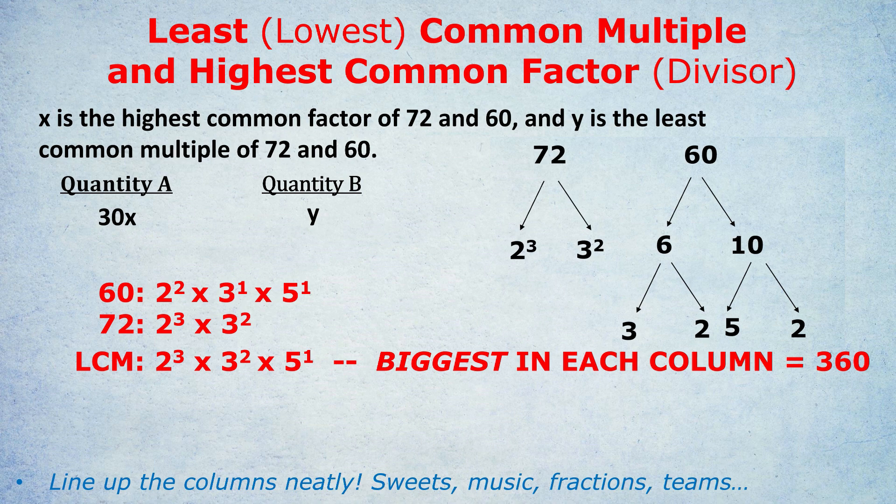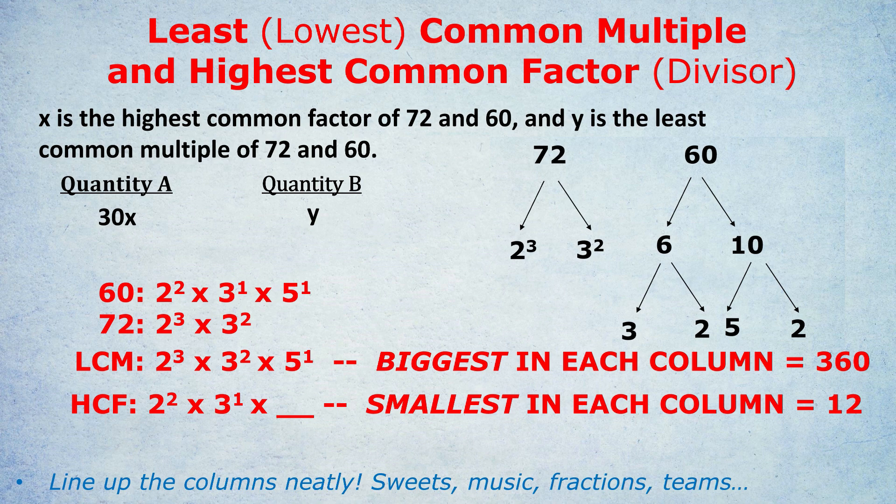I'm going to try and work that out. For the HCF, the smallest number in each column is 2 squared, 3 to the power of 1, and blank. You don't write 0 because that would actually become 0 if you multiply by 0. You just leave it blank because blank is smaller than 5 to the power of 1. So in this case, the HCF, the highest common factor or divisor of 72 and 60, is 2 squared times 3, which is 12. And that is how you work out the HCF of two numbers. Same thing as LCM, just the smallest number in each column. I bet you guys are amazed. If this was new to you in any way, by the way, please do leave a like and a comment.